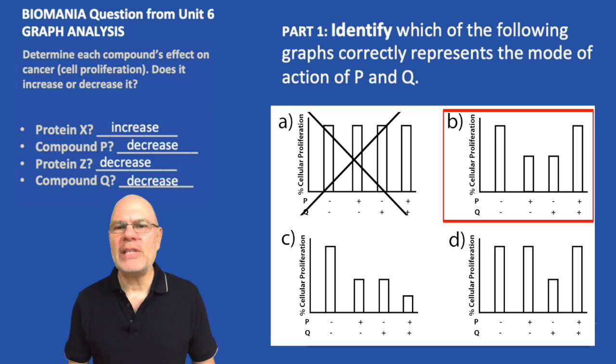Let's look at the second one. In B, we have our control on the left, some arbitrary amount of cellular proliferation. In the second bar, when P is present and Q is absent, cell proliferation goes down. That's good. That makes sense. In the third bar, when P is absent and Q is present, cellular proliferation goes down.